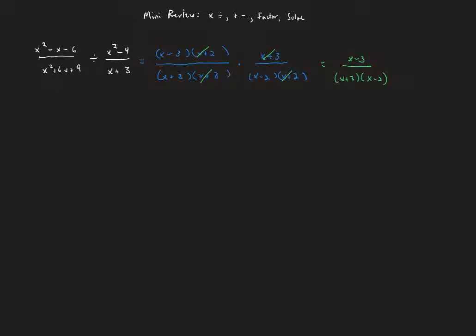Now let's do an example of an addition or subtraction. We'll do 2 over x plus 1, plus 2 over x minus 1, minus 1 over 1 minus x squared. There is no equal sign here so we're not trying to solve for anything. Our goal is to condense this into a single fraction. I'm going to start by factoring the denominators. The first two are linear so they're fine as they are. The 1 minus x squared factors as the difference of two squares into 1 minus x times 1 plus x.